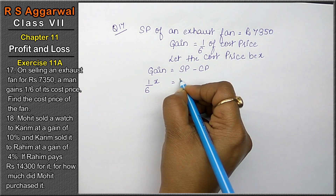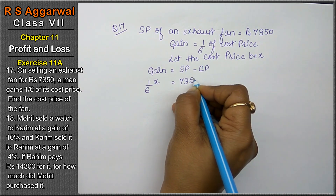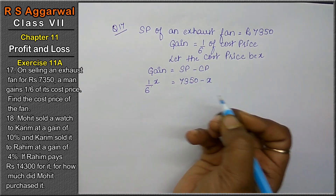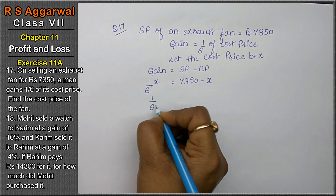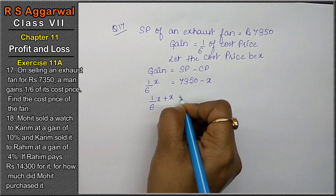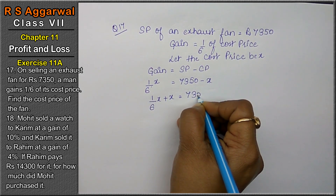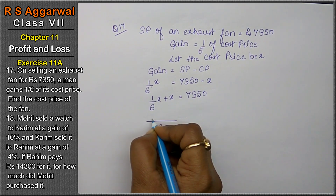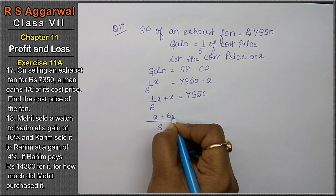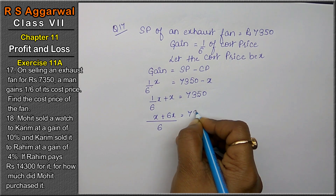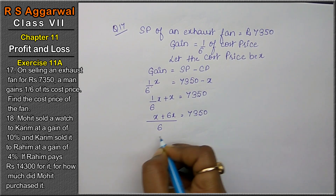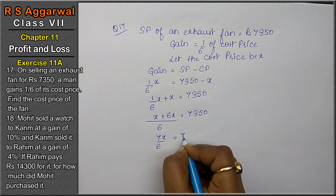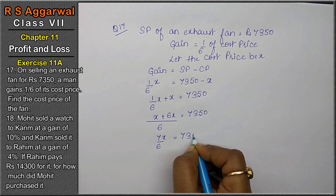SP is given as 7,350 and CP we assumed as X. Bringing X terms to one side: 1/6 x plus x equals 7,350. Taking LCM as 6: x plus 6x equals 7,350. So we get 7x upon 6 equals 7,350.